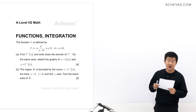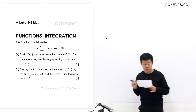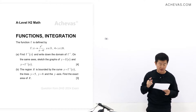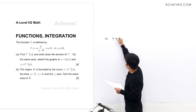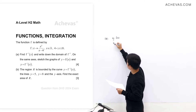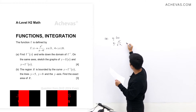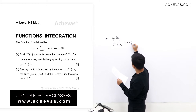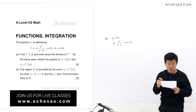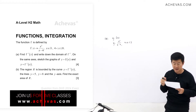We are going to take a look at this functions question. In part A, we are required to do two things: first, get the expression of f inverse when f(x) is given as x² / (x - 4), where x is bigger than 4 and less than or equal to 8. We are also supposed to write down the domain of f inverse.